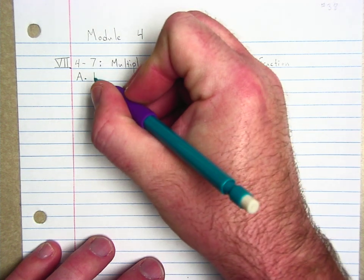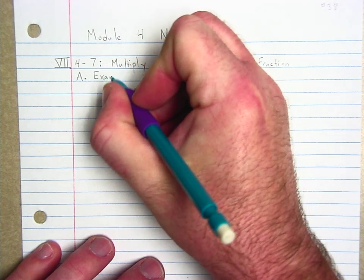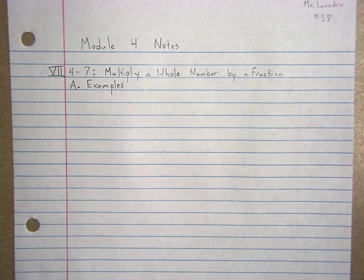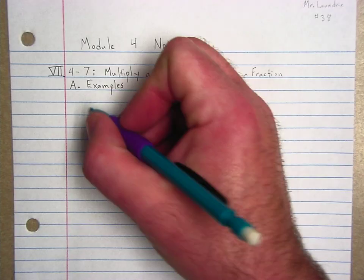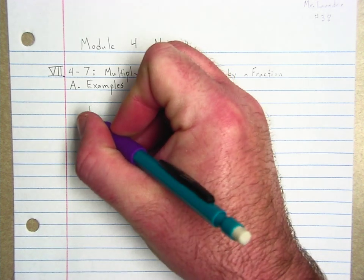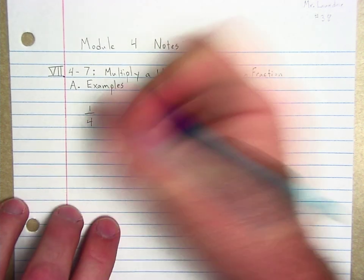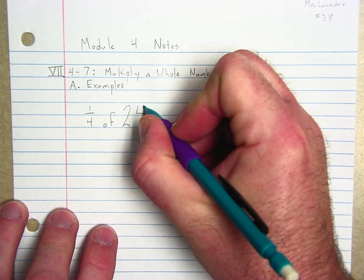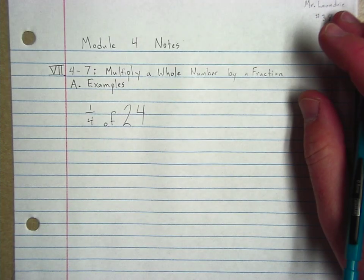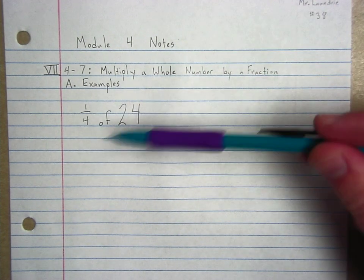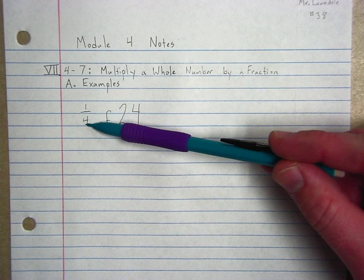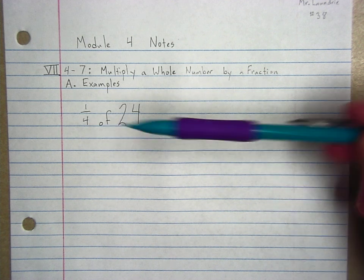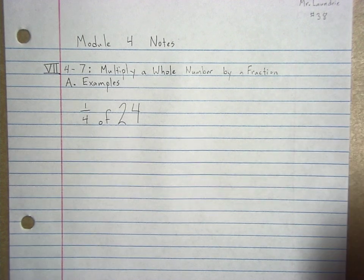And we are going to dive directly into some examples. Again, I'm hoping that this will be pretty familiar. Let's say that I ask you to find one-fourth of 24. One-fourth of 24. When you see a fraction of something, we are thinking of multiplication. And I'm going to show you why today. This is another reason why I like the tape diagrams.